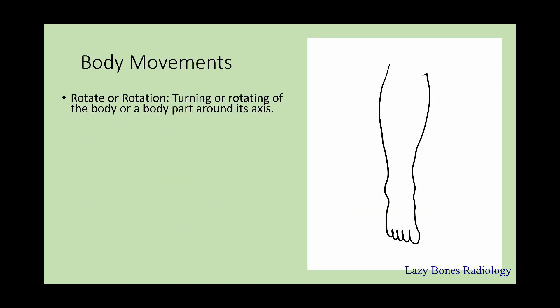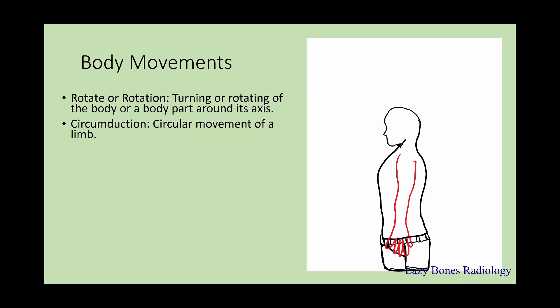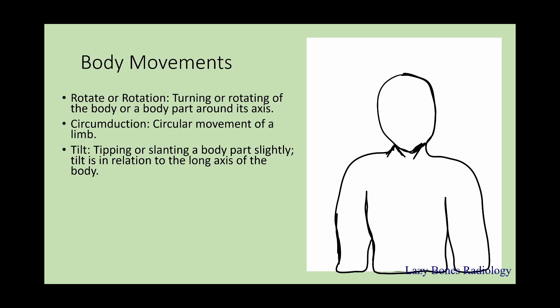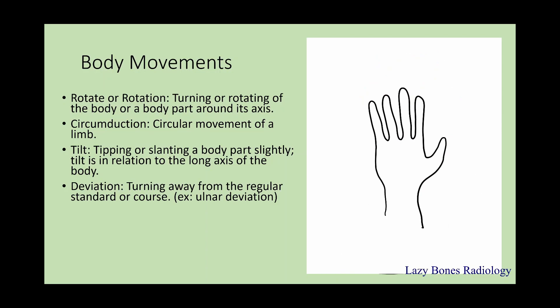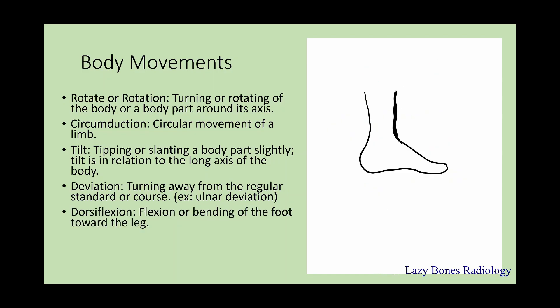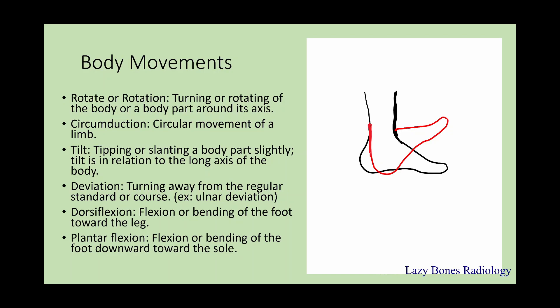Rotation is turning or rotating of a body part or body around an axis. Circumduction is a circular movement of a limb. Tilt is a tipping or slanting of a body part slightly, in relation to the long axis of the body — as you can see here as the head tilts side to side. Deviation is a turning away from a regular standard or course. Dorsal flexion is a flexion or bending of the foot towards the leg. Plantar flexion is a flexion or bending of the foot downwards towards the sole of the foot.